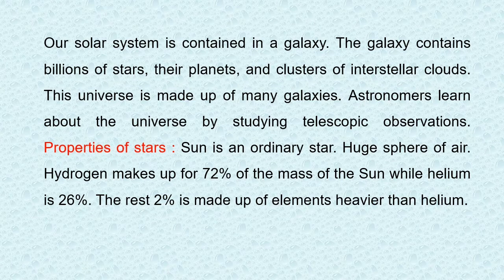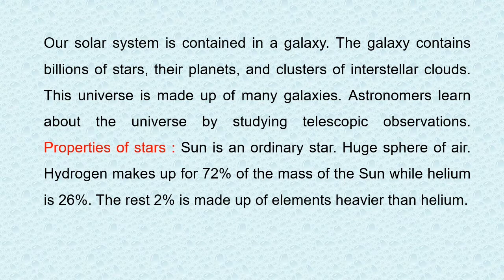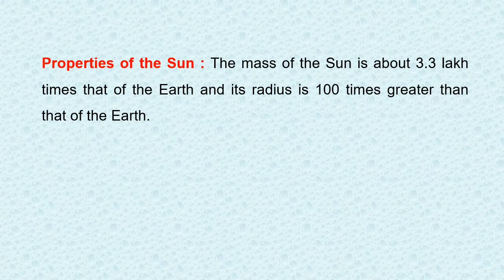Properties of stars. Sun is an ordinary star. Hydrogen makes up 72% of the mass of the sun while helium is 26%. The rest 2% is made up of elements heavier than helium. The mass of the sun is about 3.3 lakh times that of the earth and its radius is 100 times greater than that of the earth.